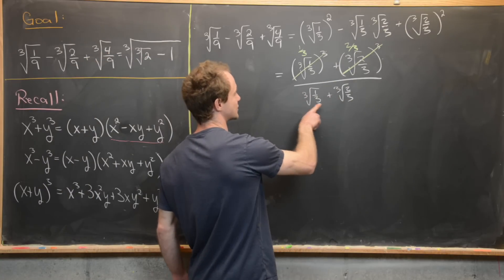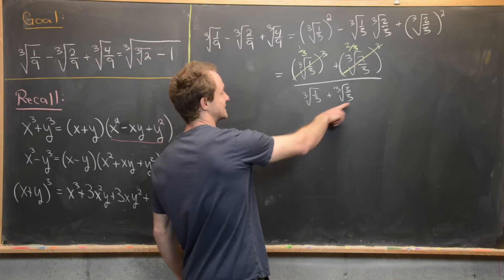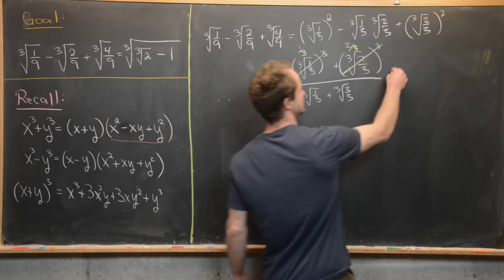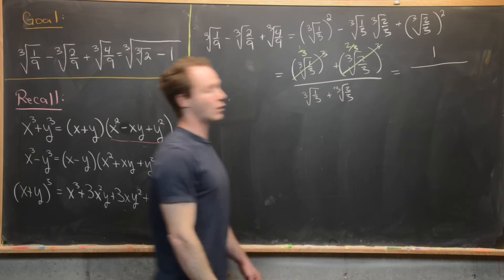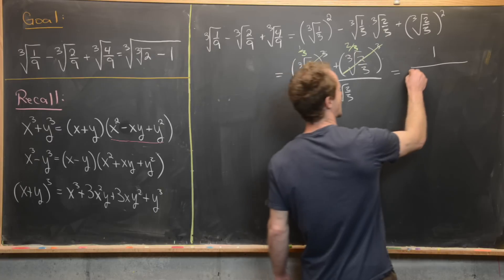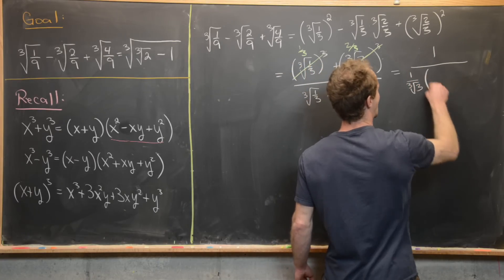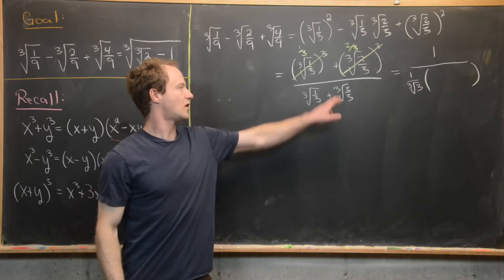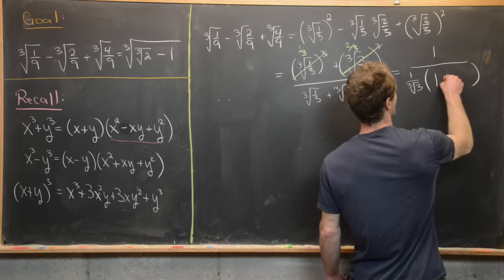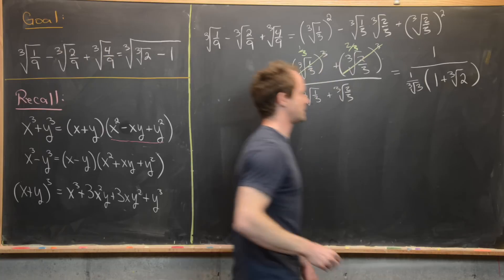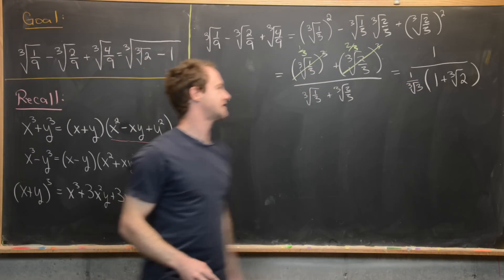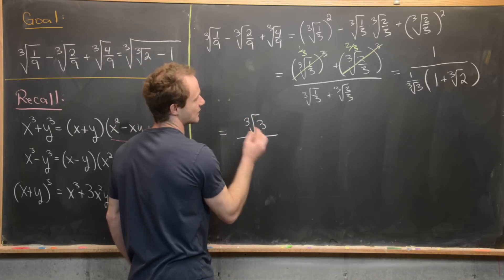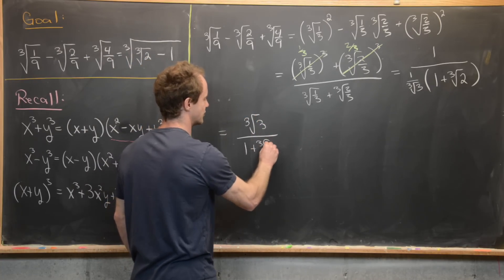Furthermore, we can factor 3 out of the denominator of each of these cube roots, as long as we keep it inside a cube root. That leaves 1 over the cube root of 3, times the quantity (1 + cube root of 2) in the denominator. Flipping that gives the cube root of 3 in the numerator over (1 + cube root of 2).